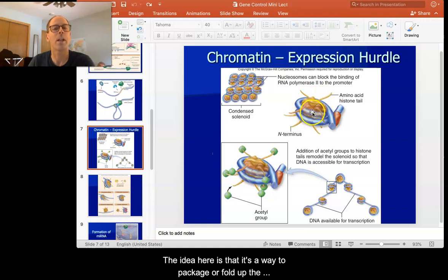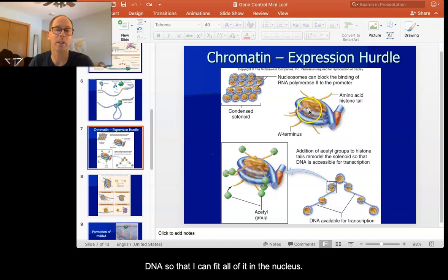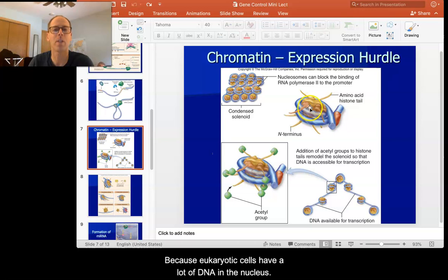The idea here is it's a way to package or fold up the DNA so that I can fit all of it in the nucleus because eukaryotic cells have a lot of DNA in their nucleus. This is a way to fold and organize. Now the problem here is when I wrap the DNA around this protein, it actually blocks the ability of RNA polymerase to stick to the DNA. So if there was a promoter right here where I'm highlighting, that RNA polymerase wouldn't be able to stick there. So we have this issue. This is a really efficient way to store the DNA, but it's problematic when I want to express the genes.